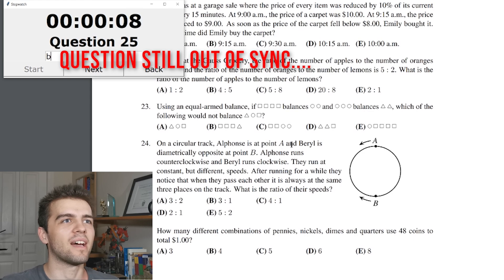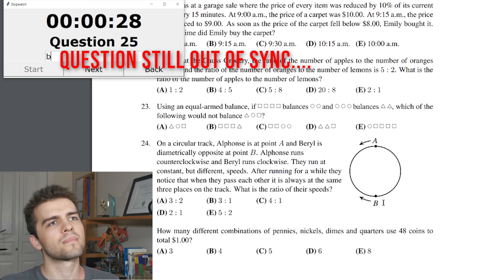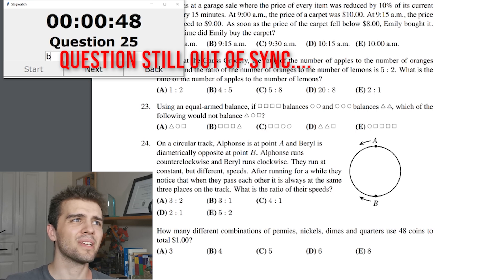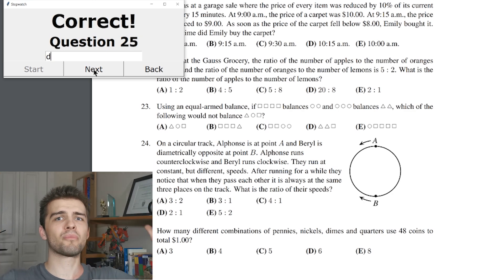On a circular track Alphonsi is at point A. Alphonsi I like that name and Barrel is diametrically, I've never heard that word, opposite of point B. Alphonsi runs clockwise and Barrel runs clockwise. They run at constant for different speeds. After running for a while they notice that when they pass each other, it's always at the same places on the track. That's a really cool question. What is the ratio of their speeds? Well, it's just arc length they would pass maybe here here and here I'm guessing. And so I'm guessing the one guy is running two times faster it's probably two to one. I'm going to guess the answer is D of course I'm going to get tricked here. I just want to get one of these correct. Why is it question 25 go back to 24? I'm going to guess the answer is D two to one. Correct. I got one of them right? It's a miracle.